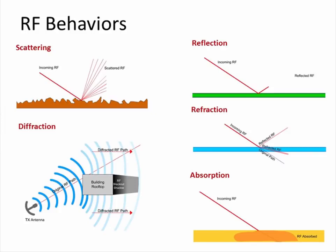The second of the five RF fundamentals you must know is RF behavior. As RF moves through a space it has a particular behavior set, including scattering, diffraction, reflection, refraction, and absorption. The most important ones we see indoors are reflection and absorption, with some refraction and diffraction as well. Reflection is the RF signal bouncing off a reflective material with a size greater than the wavelength — metal objects like filing cabinets are prime examples. Many other objects cause some level of reflection as well.